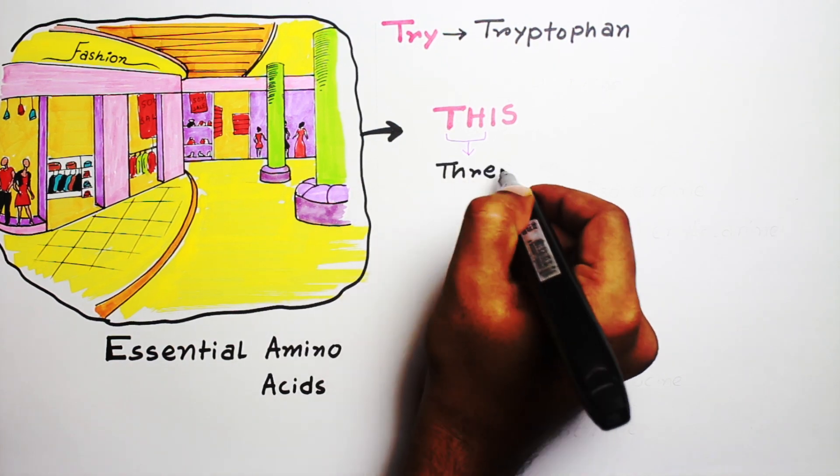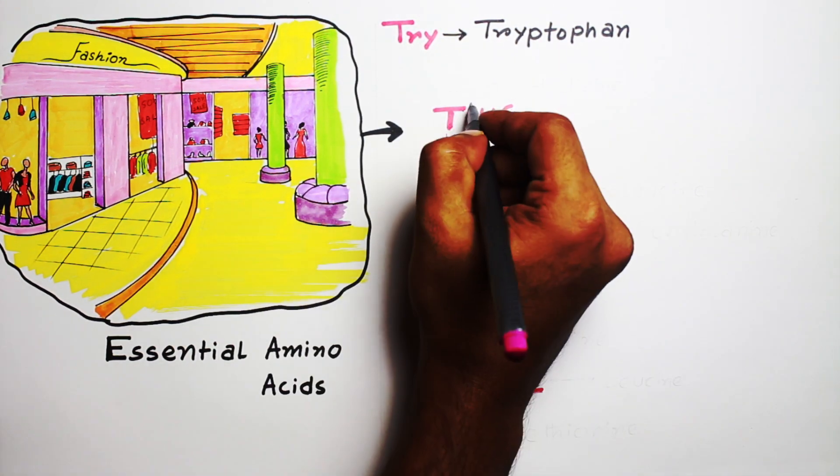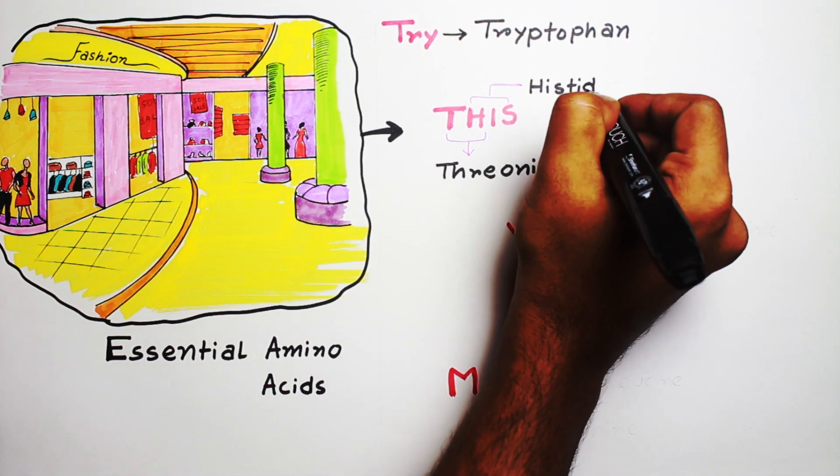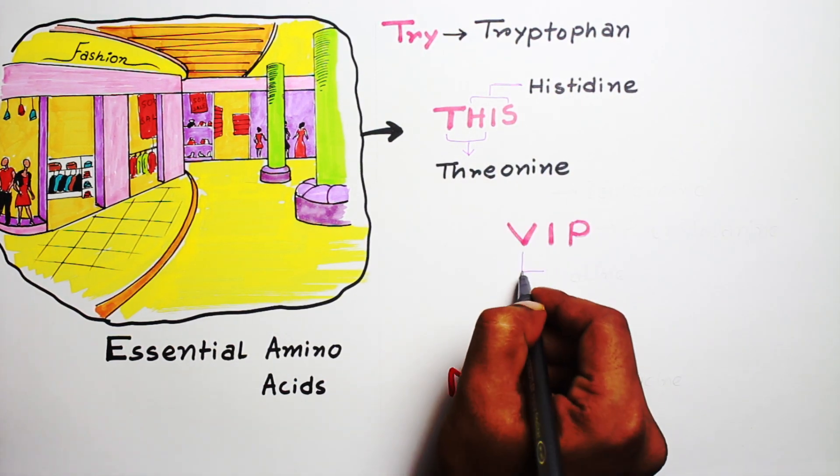threonine, and 'His' represents histidine. Now come to 'VIP.' 'V' represents valine